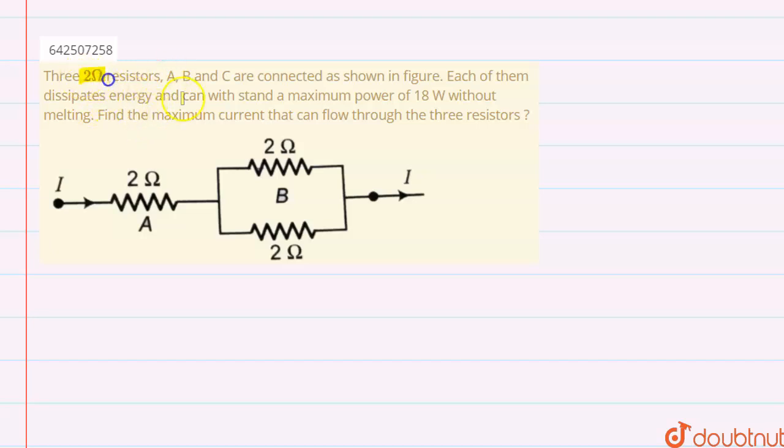are three resistors of 2 ohm each. Here is the first resistor, this is the second, and this is resistor C, the third resistor. It has been